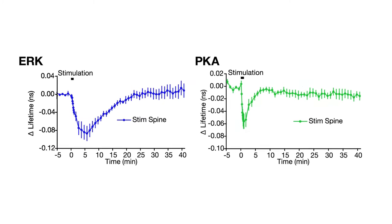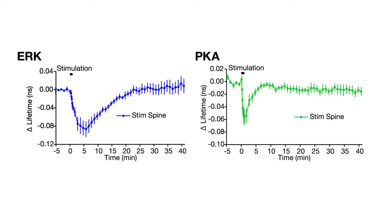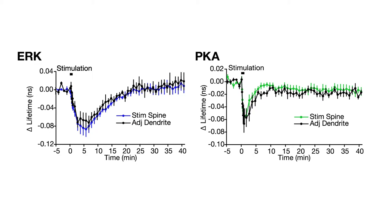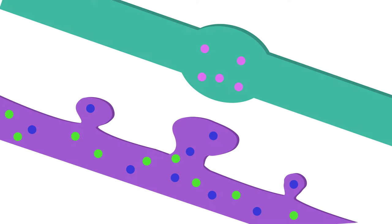But the ultrasensitive sensors revealed that the kinases weren't active just in the spine. The activity also spread into the dendrite and nearby spines. This indicates that the influence of stimulation spreads to multiple nearby spines and could facilitate growth of those as well.